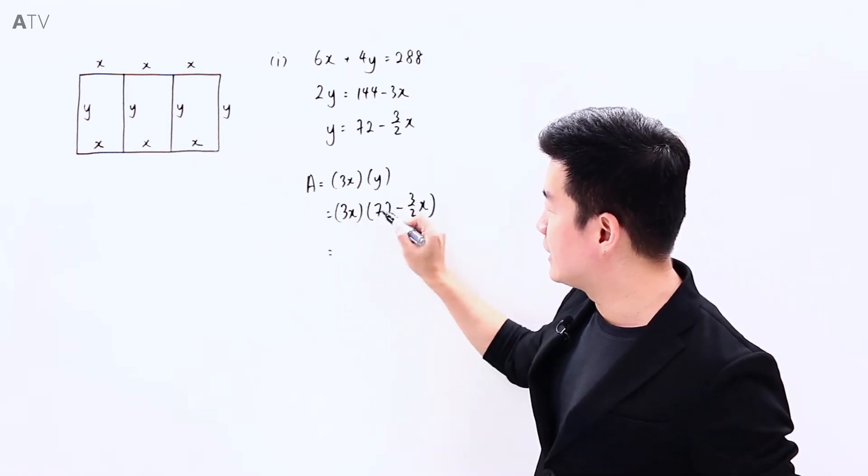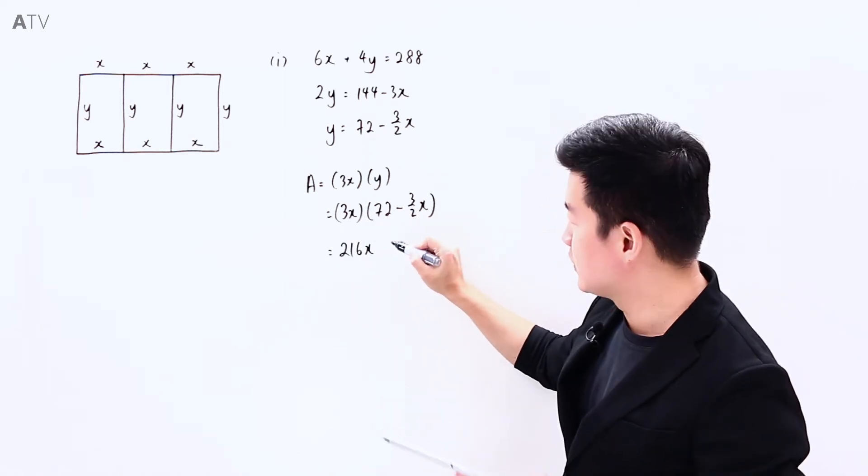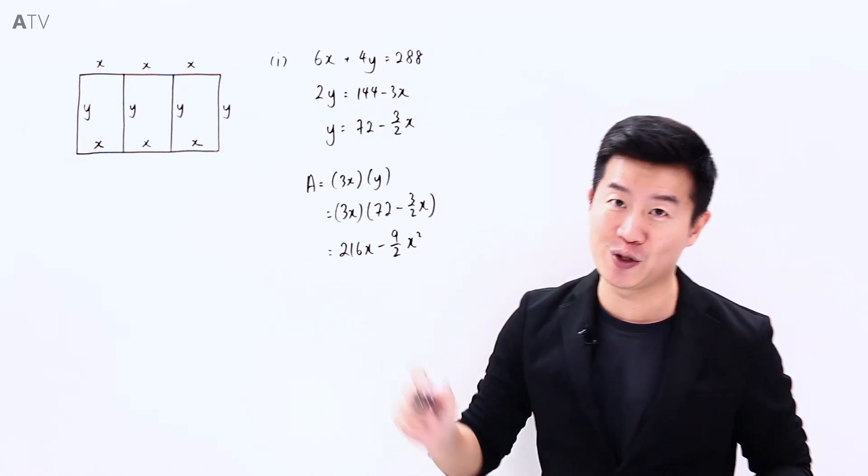This multiplied by this will give me 216x, and this multiplied by this will give me minus 9 over 2 of x squared, which is what the question wants us to show.